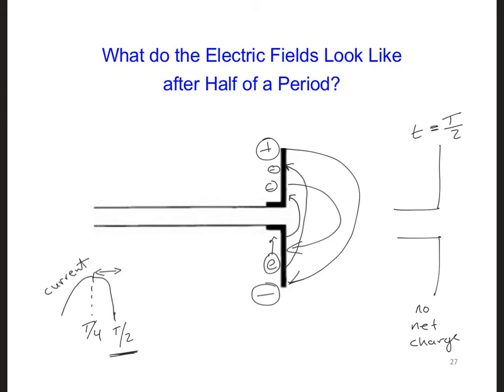Also at time T over 2 seconds, the current is zero, so there are no accelerating electrons. There are just lots of free electrons here evenly distributed. So no electric field disturbances are being produced anymore either.